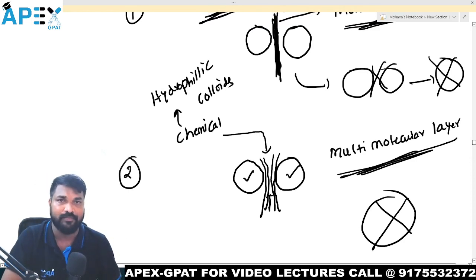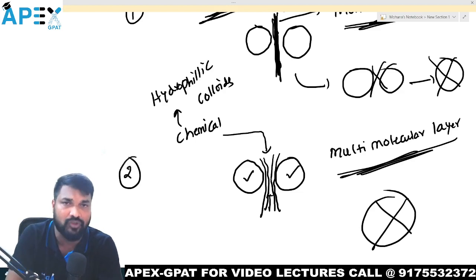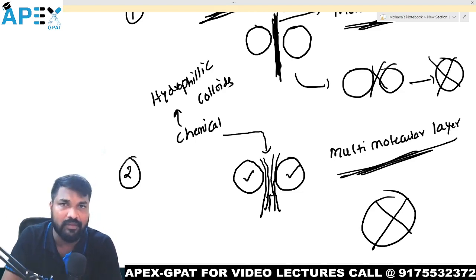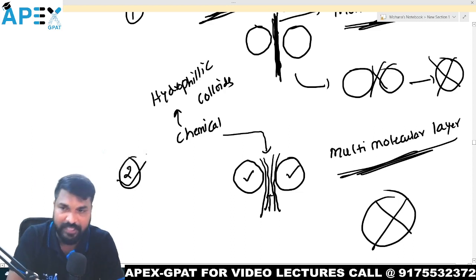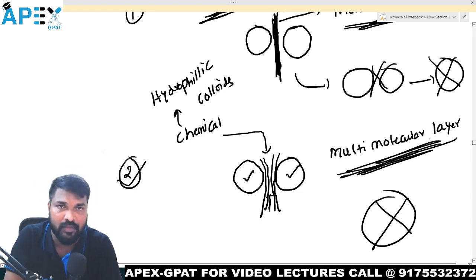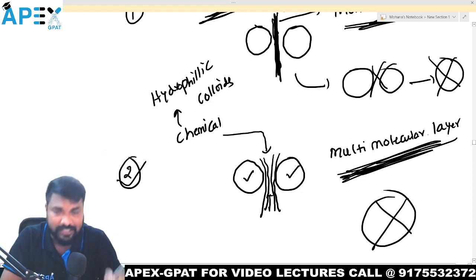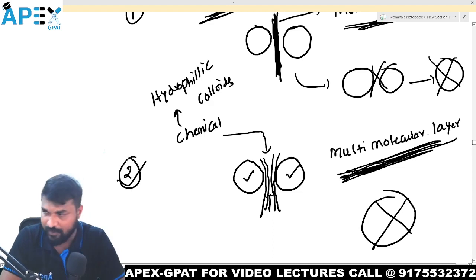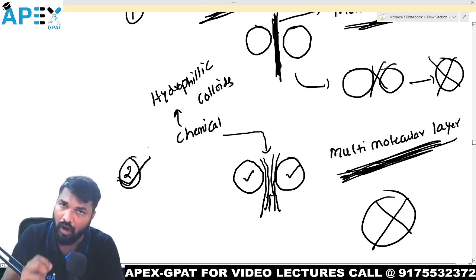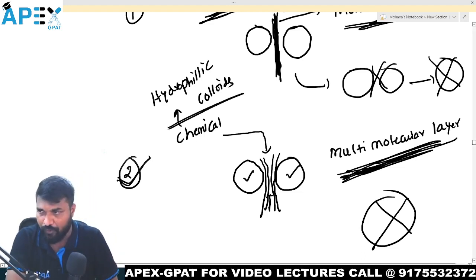When we compare the first and second approach — monomolecular layer versus multi-molecular layer — which is the best? The answer is the second one. Hydrophilic colloids are the best because they form multi-molecular layers, which are much stronger. A single layer can rupture, but a multi-molecular layer does not rupture as easily. That is why multi-molecular layer formation is always best compared to a monomolecular layer.